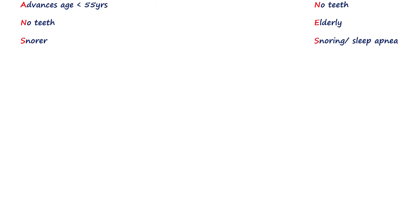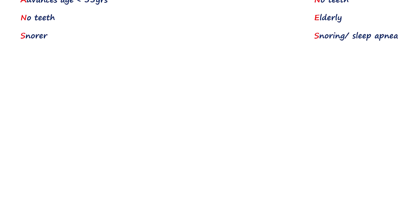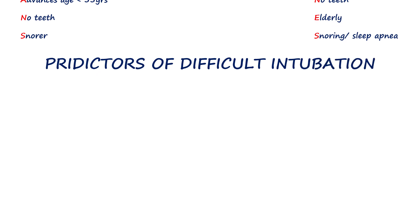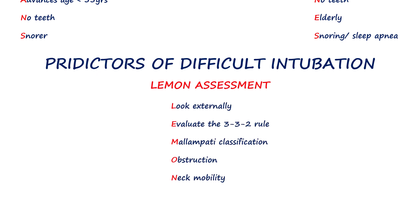When it comes to predicting difficult laryngoscopy and intubation, there are many individual bedside tests and grouped scoring systems. But in clinical practice, one of the most practical and widely used is the LEMON assessment — a simple mnemonic that helps us quickly remember and perform the essential steps of airway evaluation.